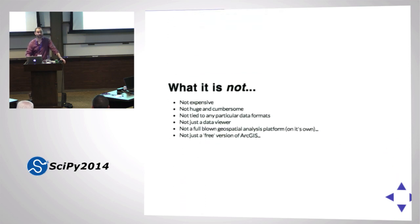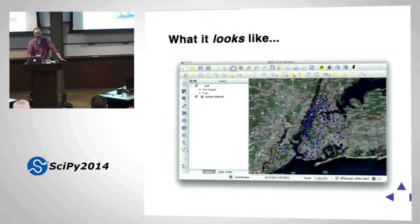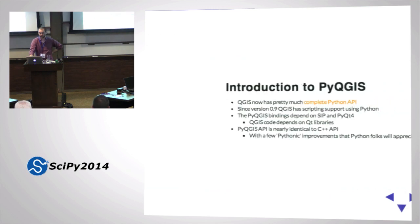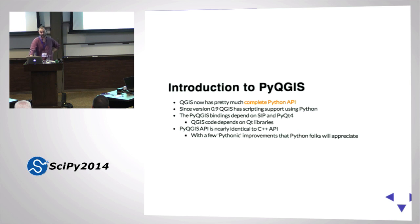PyQGIS is pretty much the complete Python API for QGIS - anything QGIS can do, you can do from Python, including anything you can do with the GUI. It's almost 100% complete. Since version 0.9 it has had Python support. QGIS uses the Qt libraries, so you use SIP and PyQt to work with it. If you've done PyQt GUI programming, working with it in Python will be familiar. QGIS itself is written in C++, and the Python API is almost the same with a few things to make it more Pythonic.